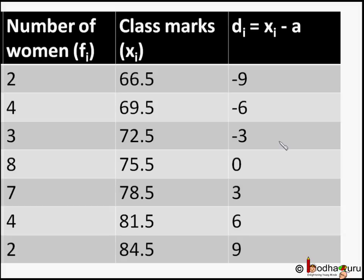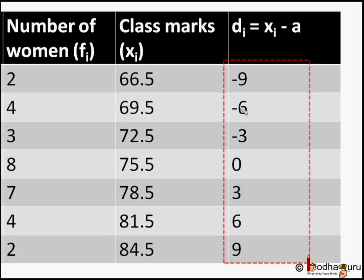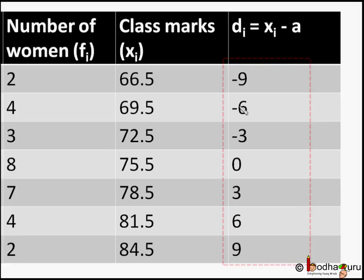Now let us find the value of all the di's — the deviations. For that, we subtract the assumed mean a = 75.5 from xi. D1 = x1 = 66.5 − 75.5 = −9. Second row: 69.5 − 75.5 = −6, and so on. Now look at the di table.